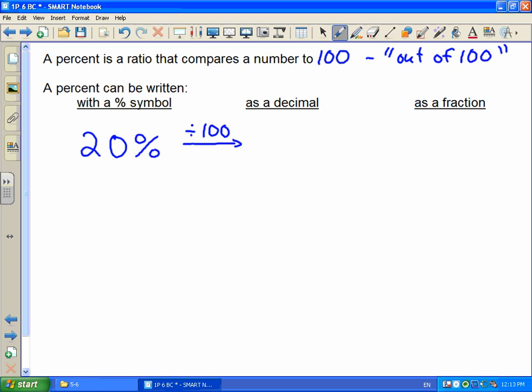The out of 100 means divide by 100, so if we take 20 divided by 100, we get 0.20. That's 20% as a decimal. We can also write it as a fraction. Because 20% means 20 out of 100, we can write it as 20 over 100. We can put this fraction into lowest terms, which would be 1 over 5.